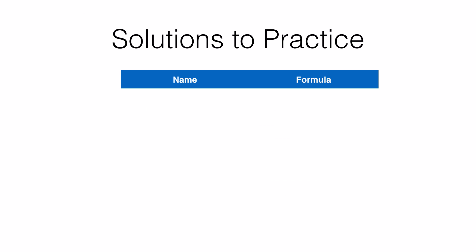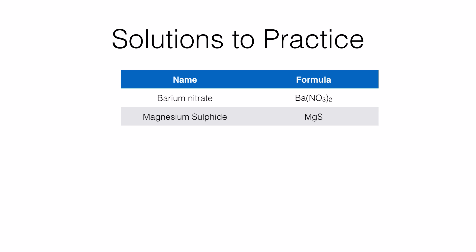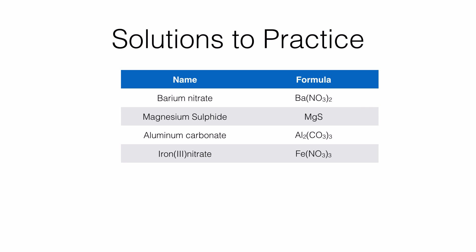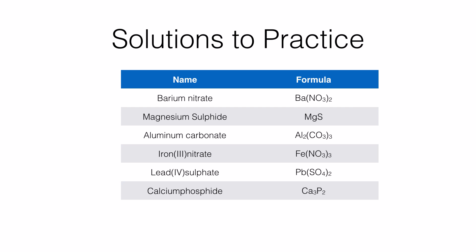Here are the solutions to the practice questions. Barium nitrate: Ba(NO3)2. Magnesium sulfide: MgS. Aluminum carbonate: Al2(CO3)3. Iron(III) nitrate — notice that iron is multivalent, so we write the valency in brackets: Fe(NO3)3. Lead(IV) sulfate — lead is a multivalent ion with valency plus 4: Pb(SO4)2. Calcium phosphide: Ca3P2 — note it is phosphide, not phosphate, so it is a single element. Sodium hydrogen carbonate or sodium bicarbonate: NaHCO3.